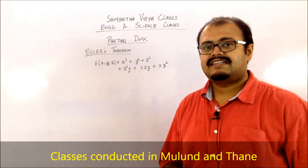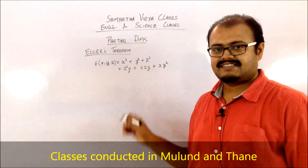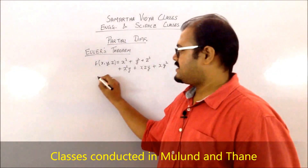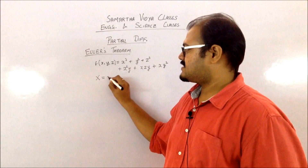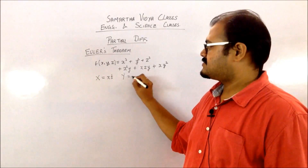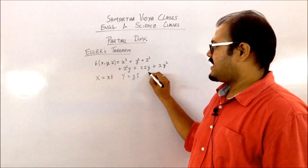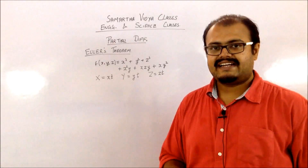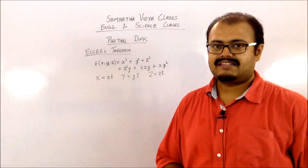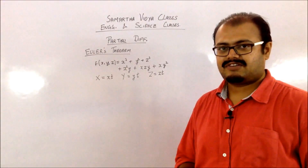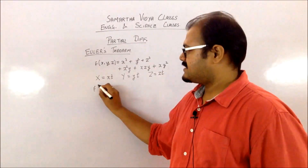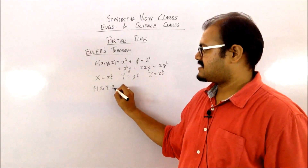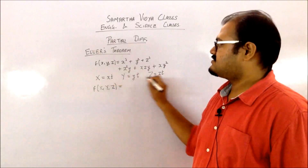Now to calculate the degree of a function — because in this case it is quite simple, but to generalize it — what you need to do is substitute your x terms with x·t, your y terms with y·t, and your z terms with z·t. So you are converting your small x, y, z to capital X, Y, Z, and replacing capital X with x·t, capital Y with y·t, capital Z with z·t.